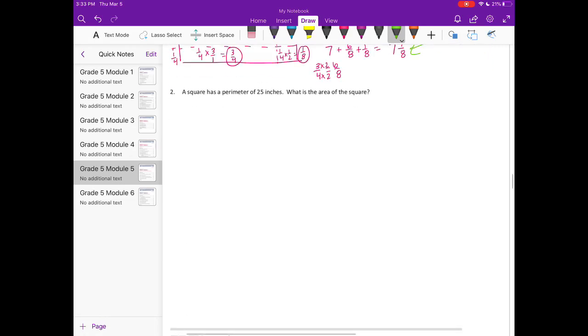Problem 2: A square has a perimeter of 25 inches. What's the area? In a square, all sides are equal, so we divide 25 by 4 to find each side length. 4 goes into 25 six times, that's 24, with 1 left over. So each side is 6 and 1 fourth inches.